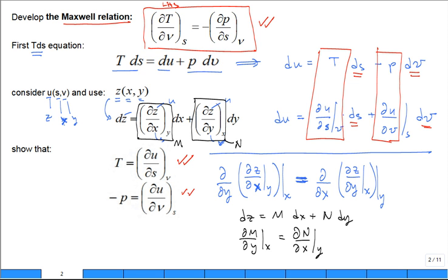So we make that observation. In this case right here, this is like our M. The partial of U with respect to S holding V constant—that's our M.